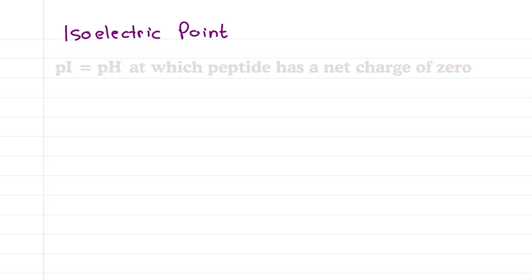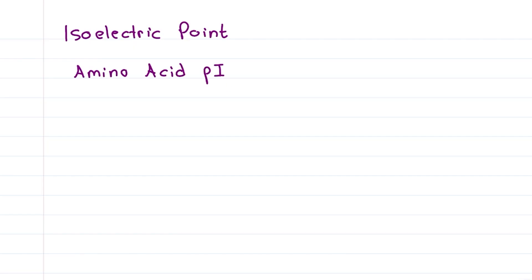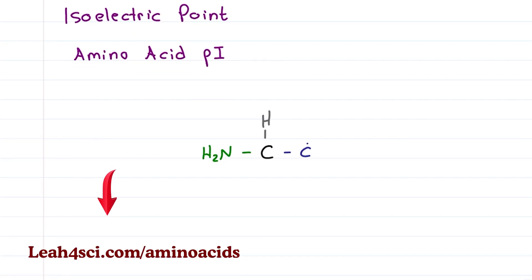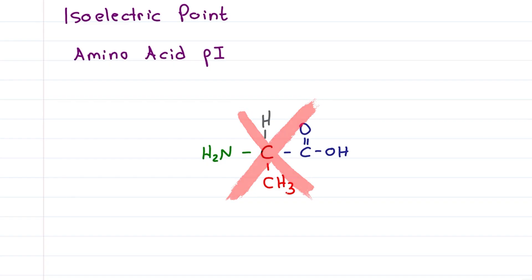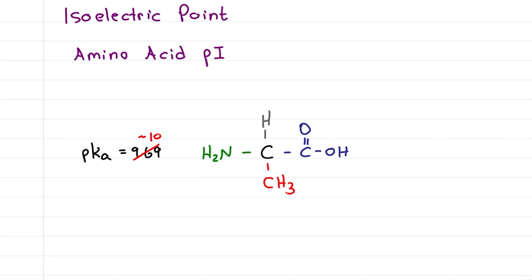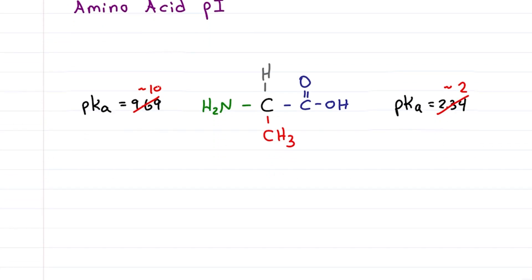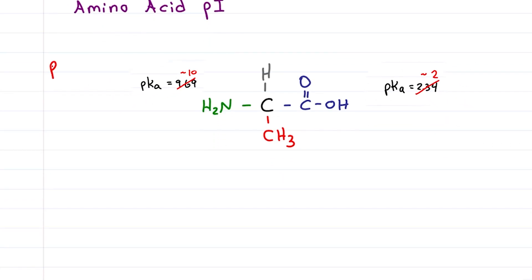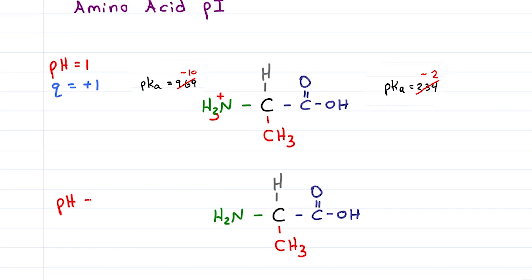First, let's review isoelectric points for amino acids. As I teach in the video linked below, this drawing of alanine is incorrect. Because the amine group has a pKa of 9.69 — MCAT students memorize about 10 — and the carboxy has a pKa of 2.34 — MCAT students memorize about 2. The structure will change if I change the pH. At a very low pH, say 1, every group is protonated for a net charge of plus 1. At a very high pH, say 11, every group is deprotonated for a net charge of minus 1.